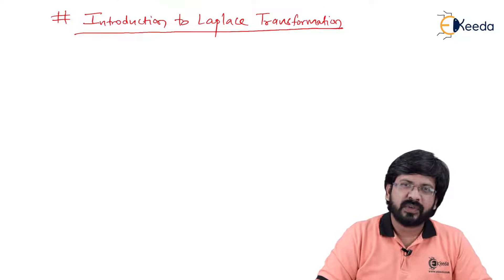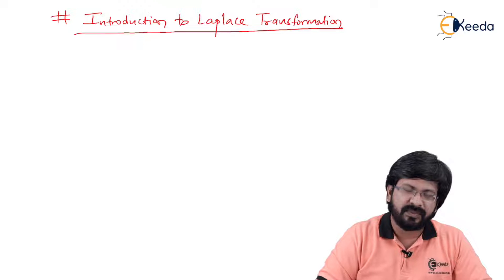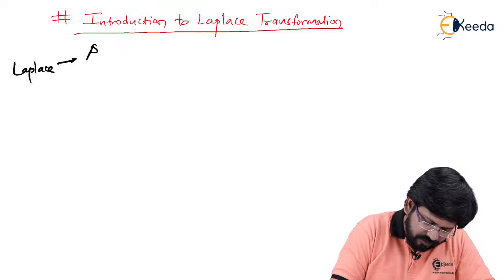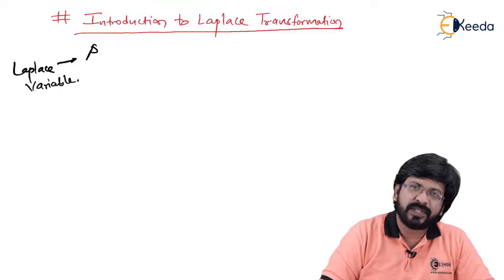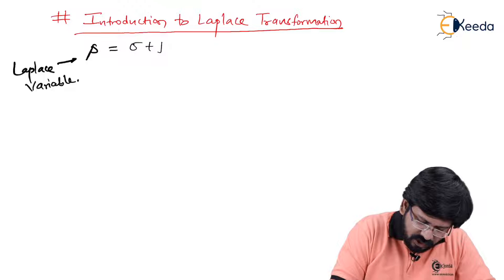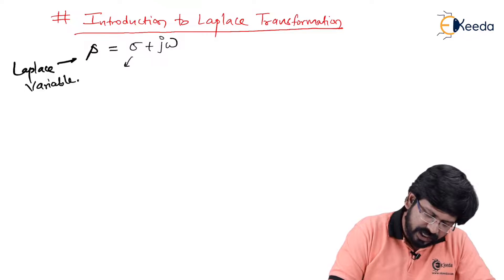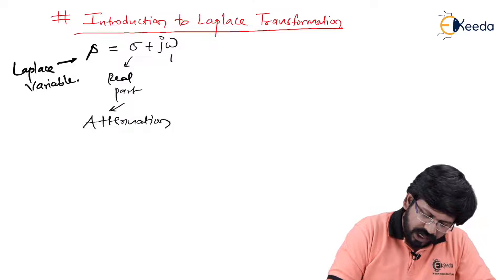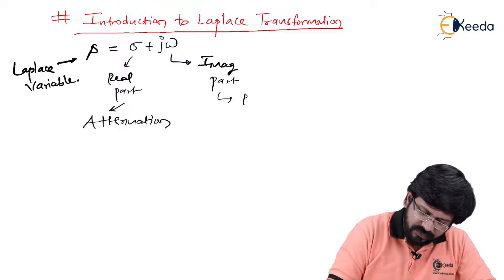In Laplace transformation, we use a variable called S, known as the Laplace variable. This variable is a complex variable, meaning it will have a real part and an imaginary part. So S is basically given as sigma plus j omega, where sigma stands for the real part and indicates attenuation, whereas omega is the imaginary part which indicates the frequency part.